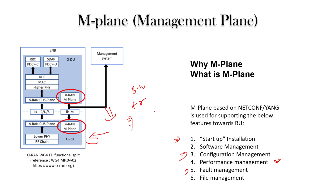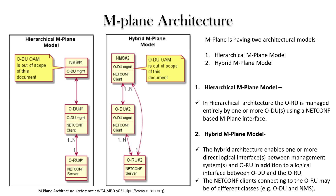Fault management covers alarm handling — notification and rectification of alarms can be managed by the management plane. File management covers how RU files are stored for KPI purposes, including their file paths. Overall, management through M-plane makes operations very time-efficient and cost-effective.